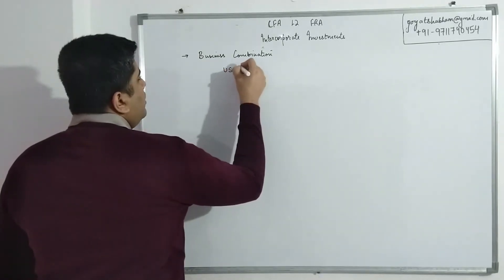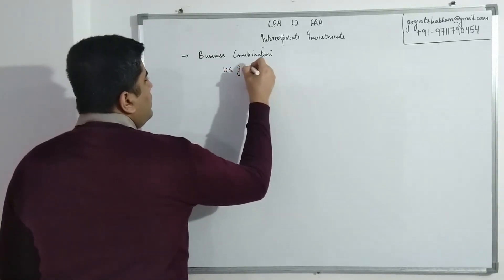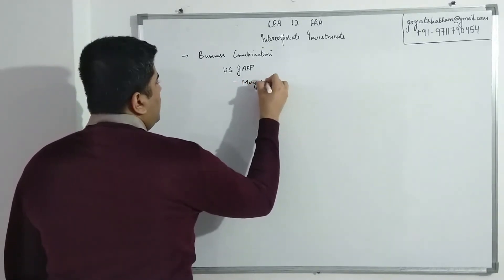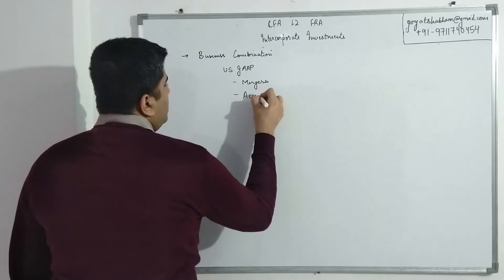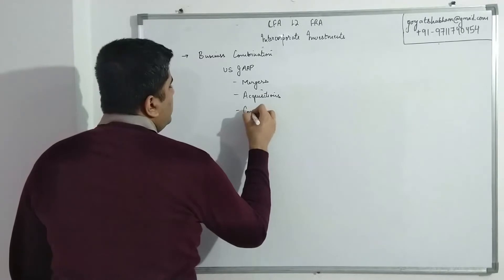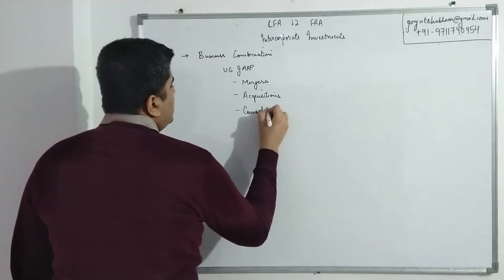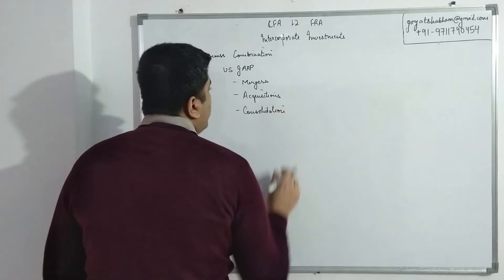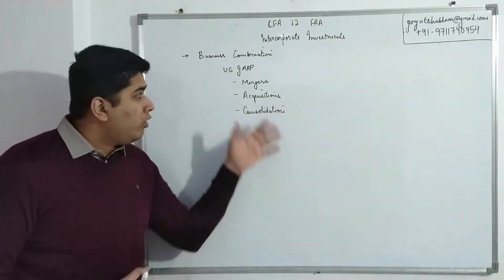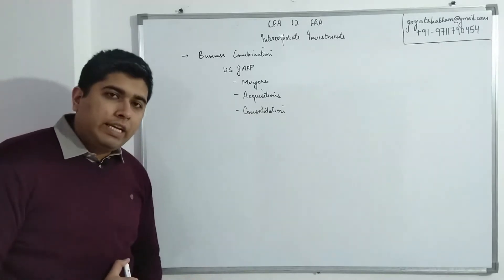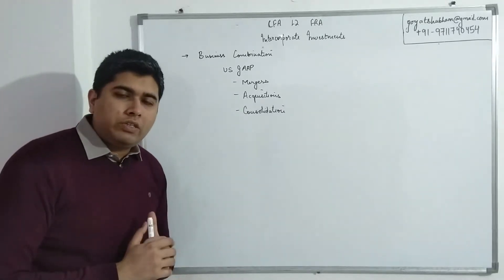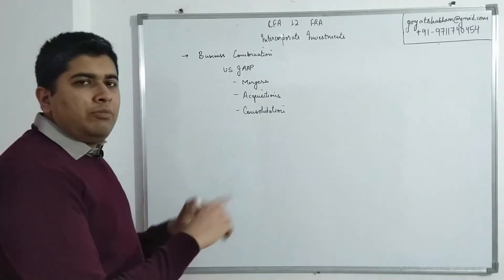US GAAP classifies three transactions: mergers, acquisitions, and consolidation. All business combinations under US GAAP will fall within one of these three categories. We've already discussed mergers and acquisitions in our corporate finance discussion, so here we'll take a simplified approach.